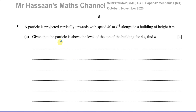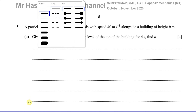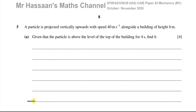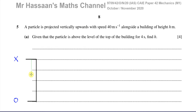So here you have a particle which is projected from a point on the ground somewhere. Let's just project it from a point somewhere down here. It reaches height h over here, to the top of the building. So it's projected from this level — let's call that level O — and it reaches the top of the building. Let's call that level X, and that distance is h meters.